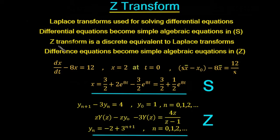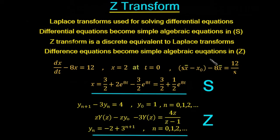The Z-transform is a discrete equivalent of the Laplace transform. In the discrete domain we don't have differential equations, we have difference equations. The Z-transform allows us to solve difference equations in a similar way that Laplace transforms allowed us to solve differential equations. We convert the difference equation to the Z-domain, algebraically manipulate it, and convert it back to the time domain to get our solution.